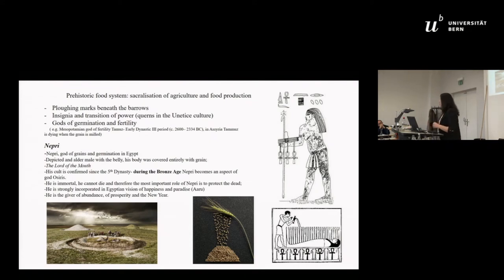And we have the first time the gods appearing, the appearance of the gods of fertility. Known by names. Tammuz, for example, in Mesopotamia, very popular. But my favorite god is Nepri. It's a less known god of Egypt. This is the god of grain and germination. It was depicted as an older male, his skin covered whole with grain. This god is associated with the Egyptian concept of happiness and fertility and never-ending life. But during the Bronze Age, something really bizarre happens with Nepri. His god is confirmed since the fifth dynasty, since the Old Kingdom. But during the Bronze Age, Nepri becomes the aspect of Osiris. So Osiris, the main god of the Pantheon, is taking the features of Nepri, becoming the major source of life and also pharaonic power.